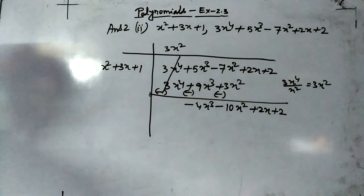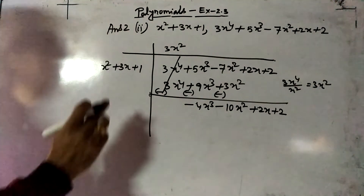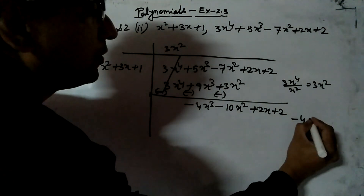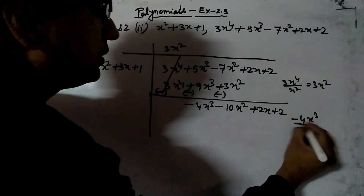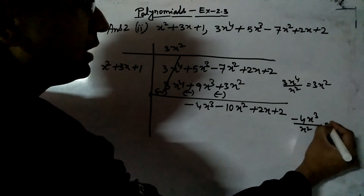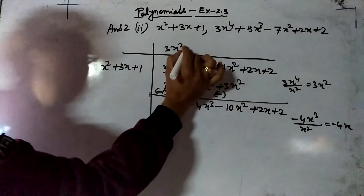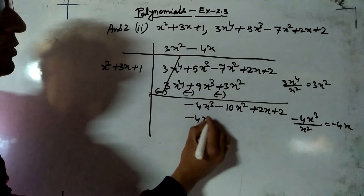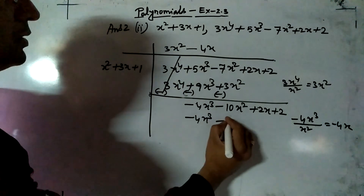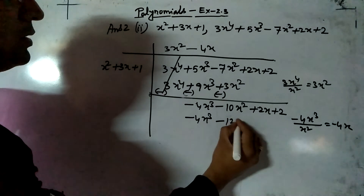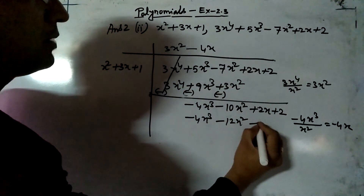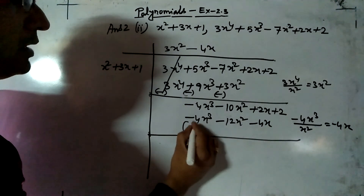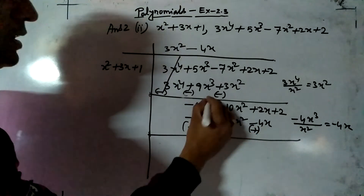Now decide the second term of the quotient. Divide -4x³ by x² to get -4x. So the next term is -4x. Multiply -4x with all three terms: -4x × x² = -4x³, -4x × 3x = -12x², -4x × 1 = -4x. Then subtract — change signs to plus here, plus here, plus here. The -4x³ terms cancel. We are left with -10x² + 12x² = 2x², and continuing with the remaining terms.